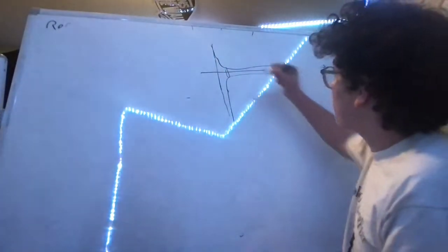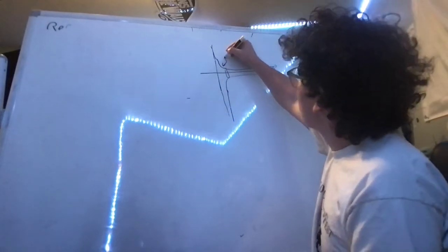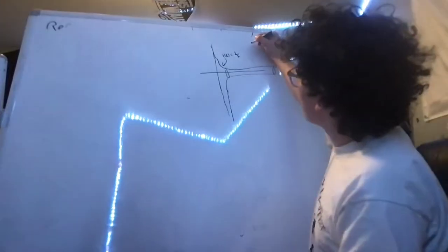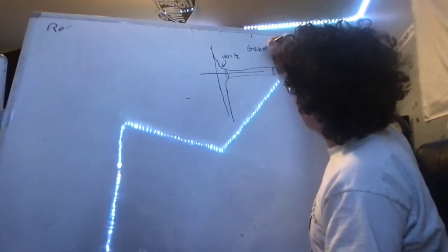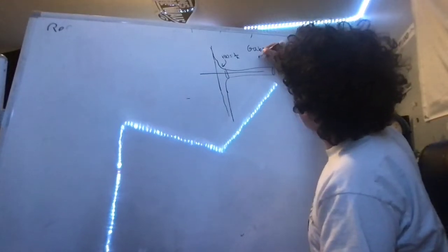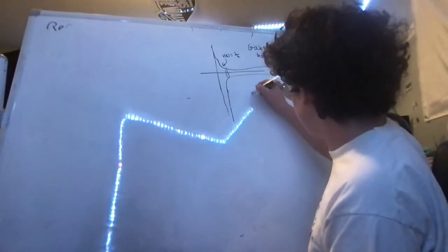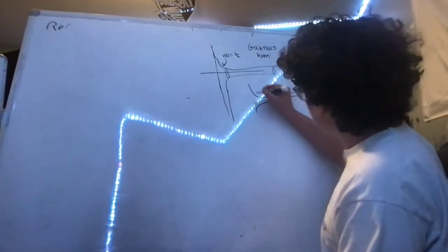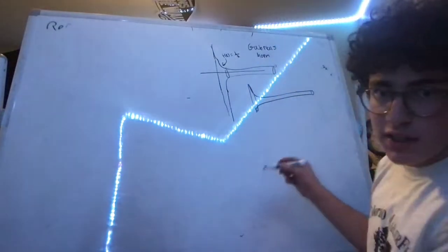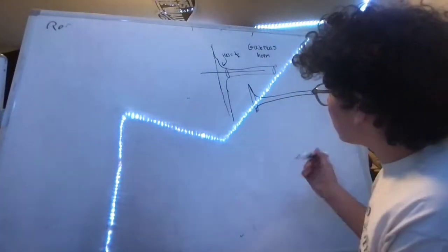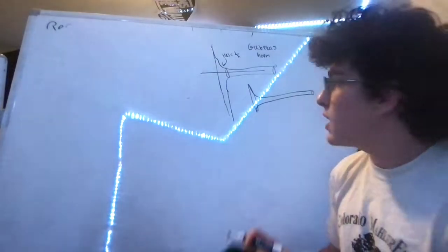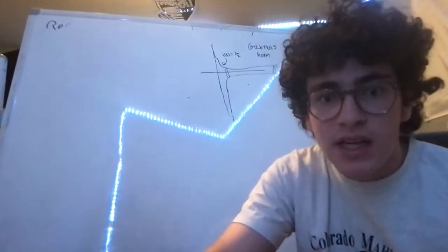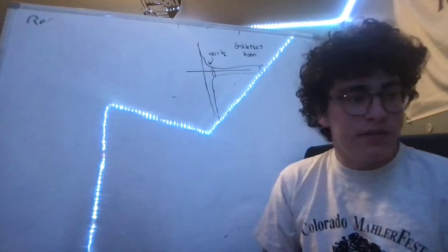What's interesting about this shape, and we're going to call this function f of x is equal to 1 over x. This function, or this shape rather, is called Gabriel's horn. The idea is that this is going to continue on forever, and you can see how it's like a little horn here.